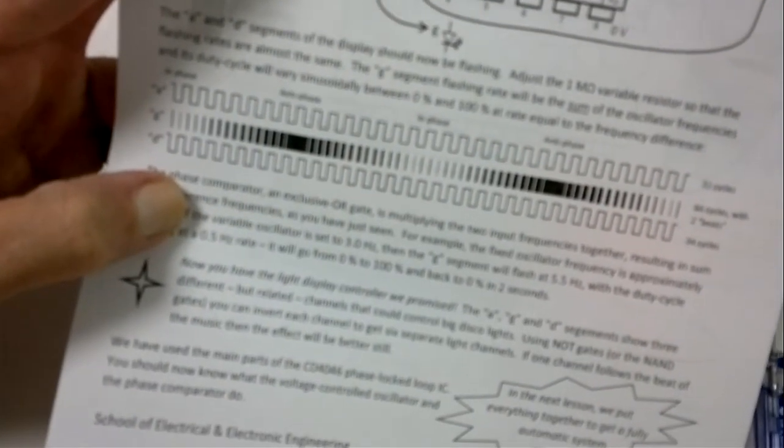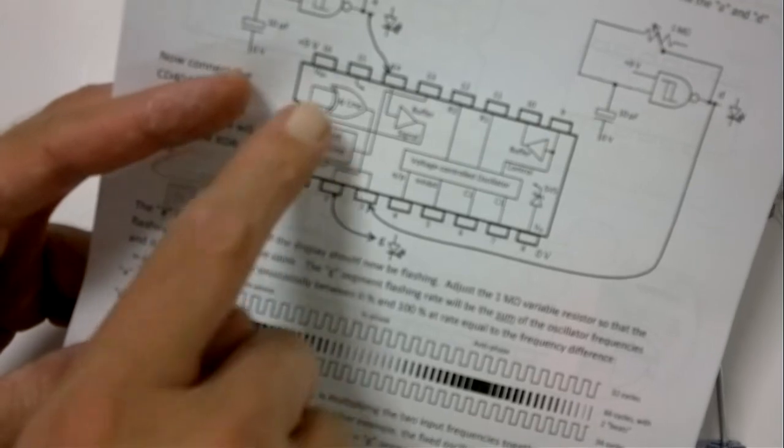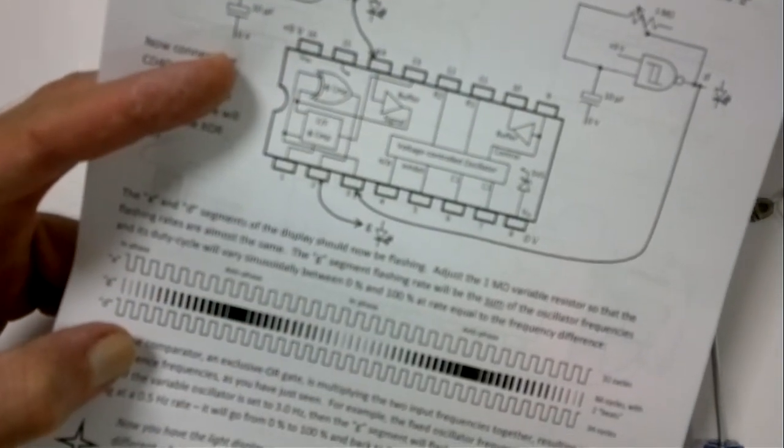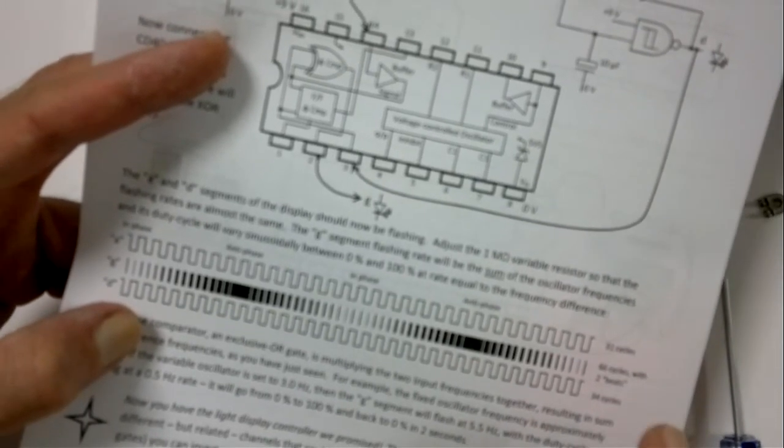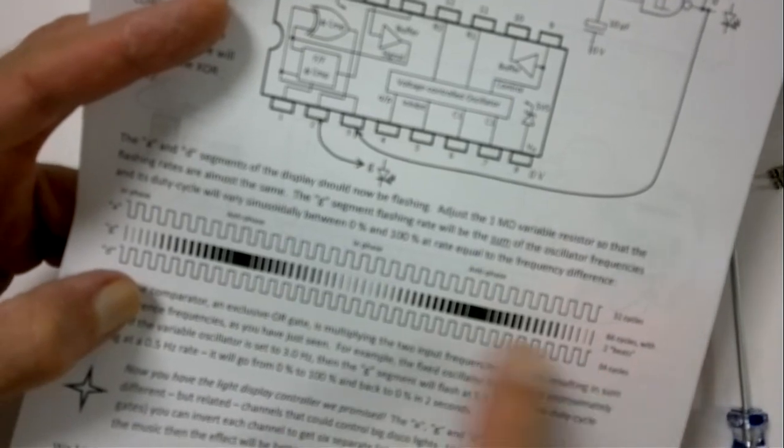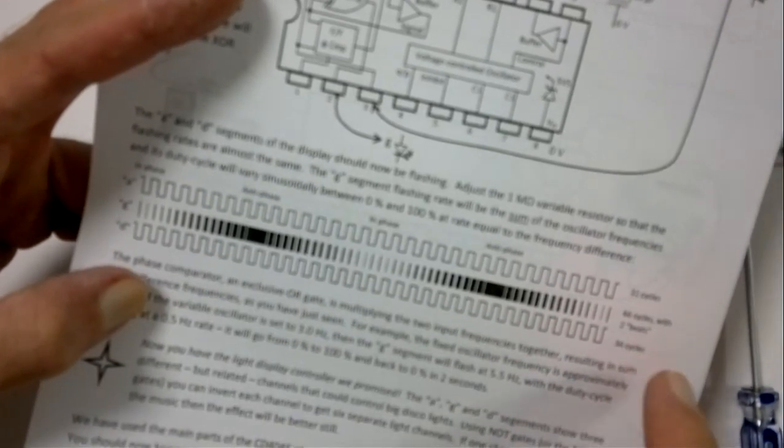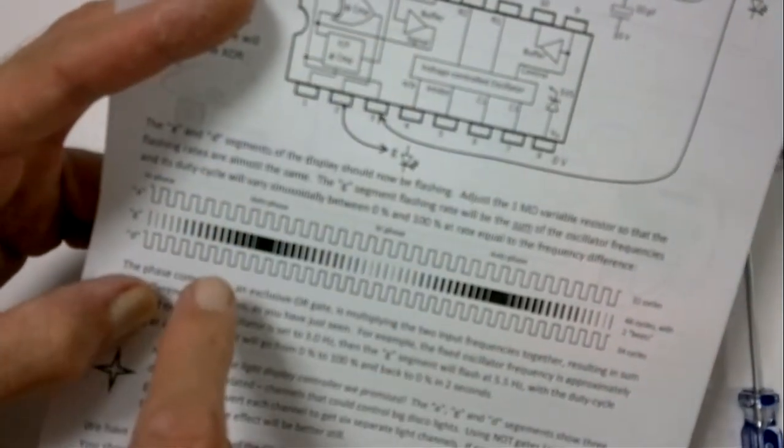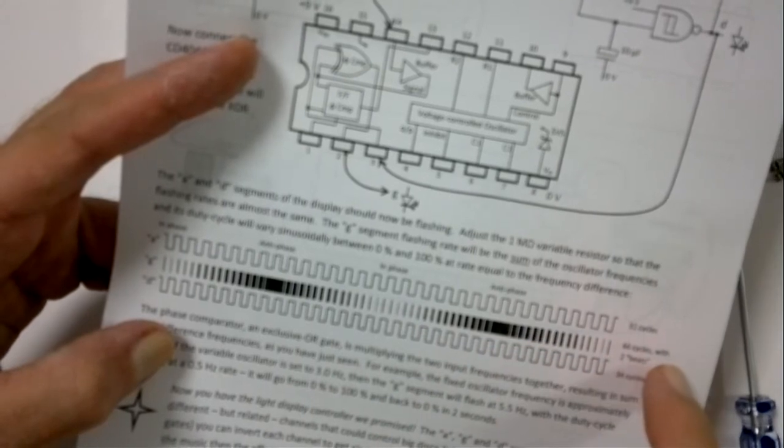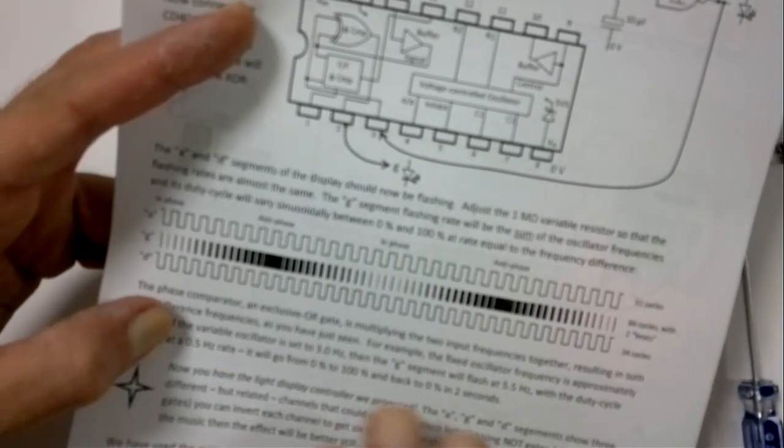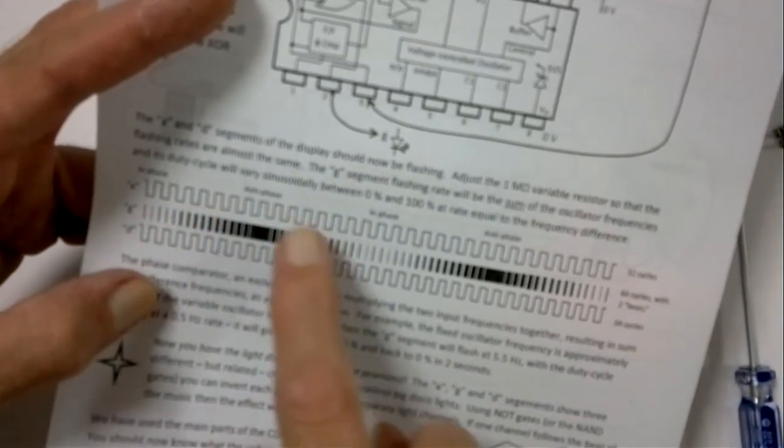So actually what's happening is the exclusive OR gate here is like a multiplier. It's multiplying the two frequencies together. And if you remember your trigonometry, if you multiply two frequencies together, what you get are sum and difference. So what happens is say we've got 32 cycles on one frequency in a period of time and 34 cycles on the other. The result from the exclusive OR gate will be 32 plus 64, which is 66 cycles, which are here. So actually it's a higher frequency. And there's a low frequency as well, which is a difference. 34 minus 32 is 2. And you get two beats happening.